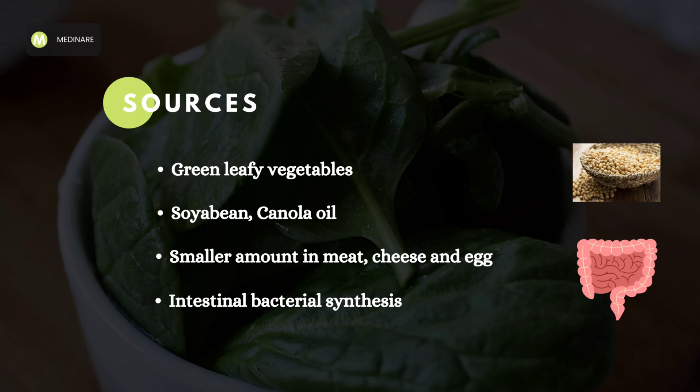The greatest dietary source of Vitamin K is green leafy vegetables. It is also available in soybean and canola oil, and is present in very small amounts in meat, cheese and egg. Even if one does not have enough consumption of Vitamin K in their diet, they can meet the daily requirements because of the production of Vitamin K by the intestinal bacteria. For this to happen, absorption should be normal.